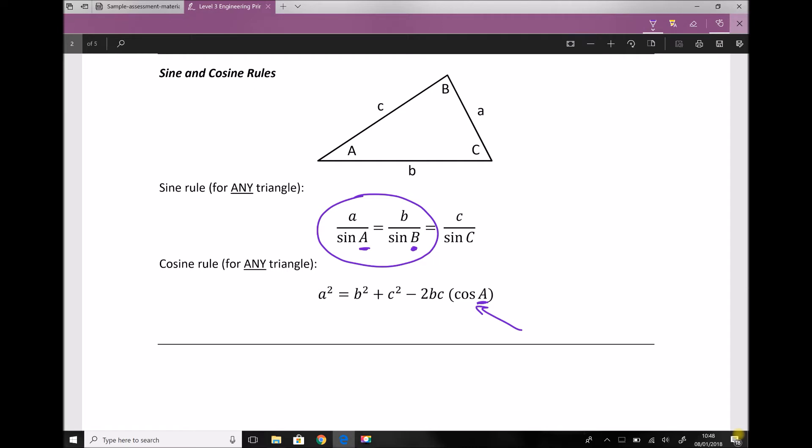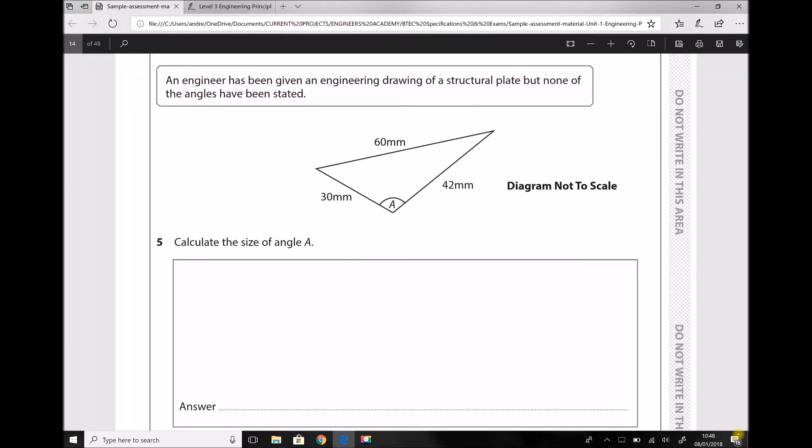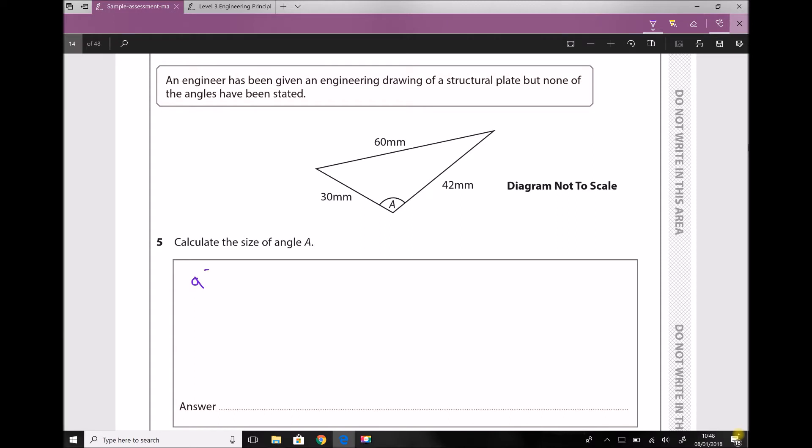Let's transfer that equation across: a squared equals b squared plus c squared minus 2bc cos A.